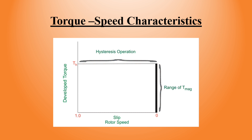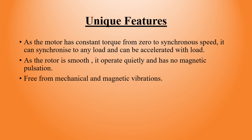Torque-speed characteristics. It's a constant torque motor. The torque exists over a particular range. It's a constant line — the torque is constant across the speed range, with only a slight drop near synchronous speed.